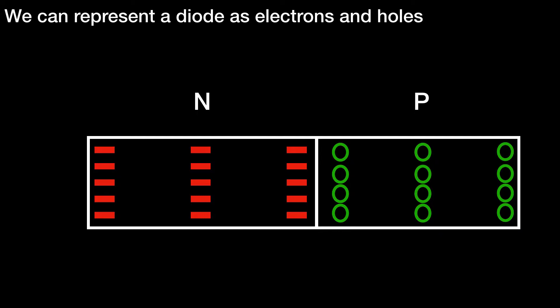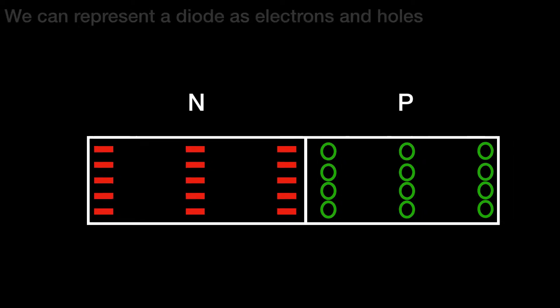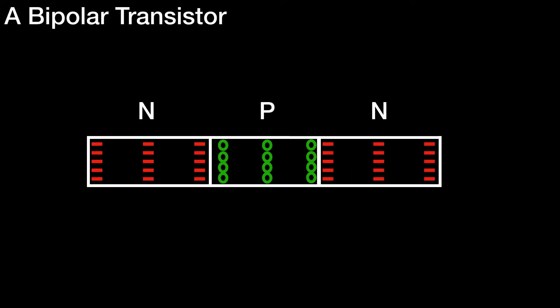If we extend the diode and add an extra bit of n-type substrate on it, we end up with a bipolar transistor.